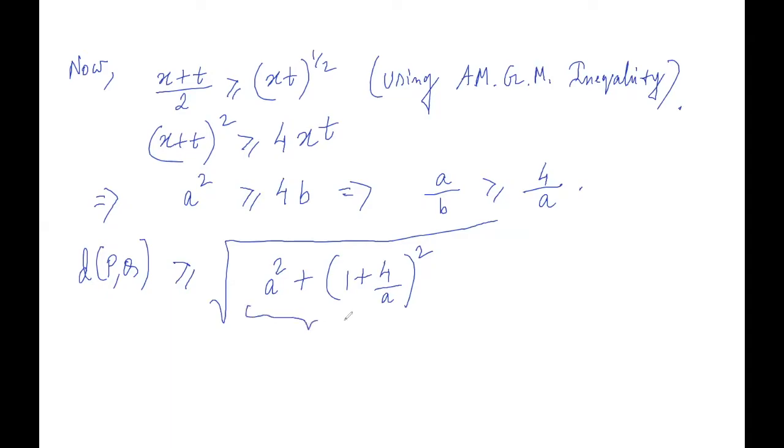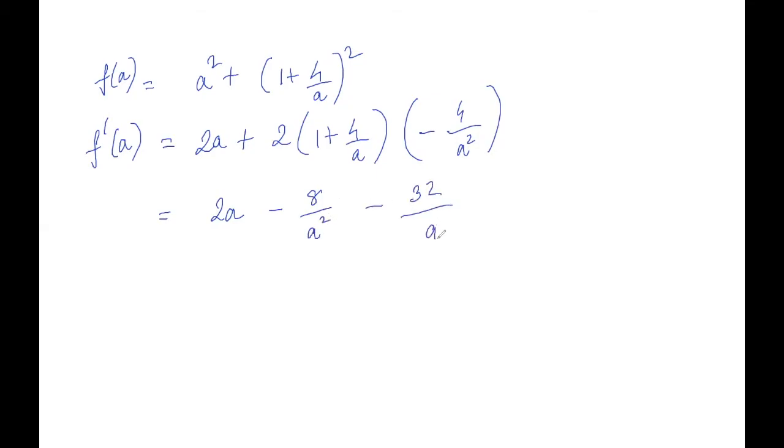Now let's take this as my function f(a). So f(a) equals a squared plus (1 + 4/a) squared. And if we take the derivative of f, so this comes out to be 2a plus 2(1 + 4/a)(-4/a²). And this equals 2a minus 8/a² minus 32/a³. And you can simplify it and write it as 2(a⁴ - 4a - 16)/a³.